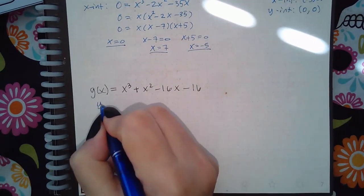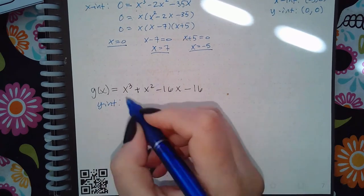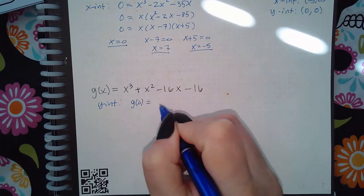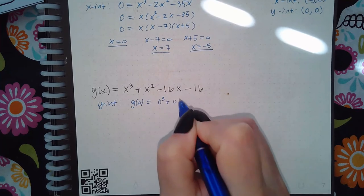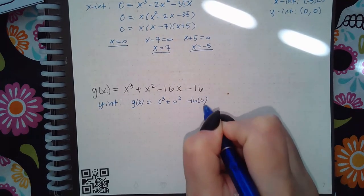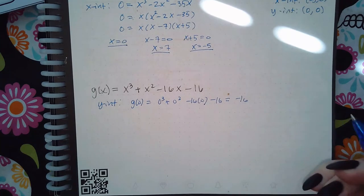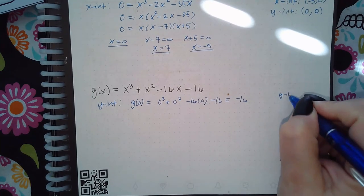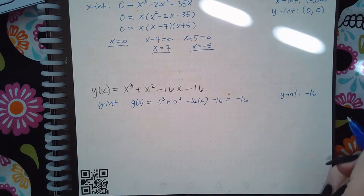Similarly for this one, I like to do the y-intercept first—that's easiest. I'm just plugging in 0: so 0 cubed plus 0 squared minus 16 times 0 minus 16. I end up with negative 16, so for the y-intercept I would write negative 16.